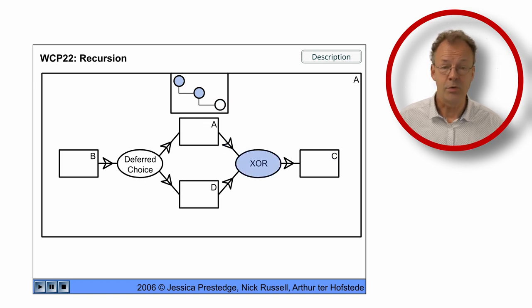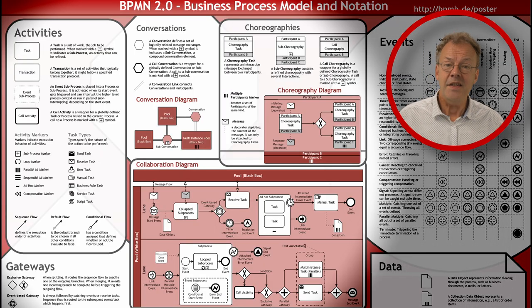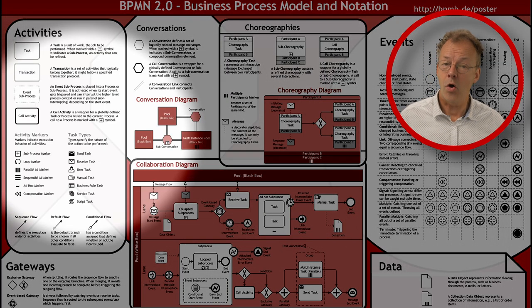And then A continues and C continues. Then we have A and C for the second level of recursion. And finally A and C for the first level of recursion. In BPMN this can be modeled using a call activity.